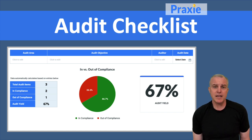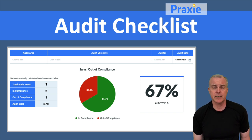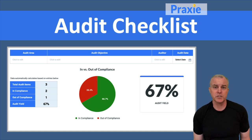What you're able to do with an audit checklist is look at the different items you want to explore, then determine which are in compliance, which are out of compliance, and define corrective actions for those.